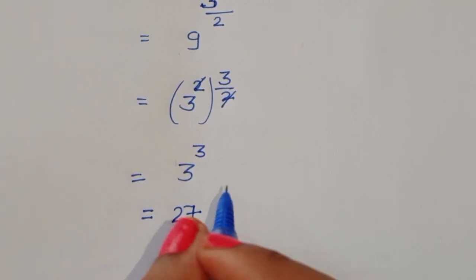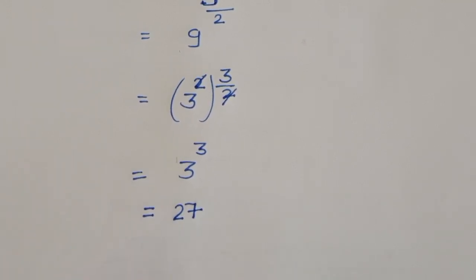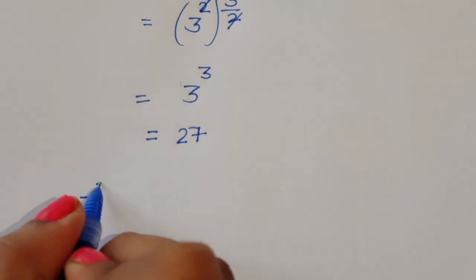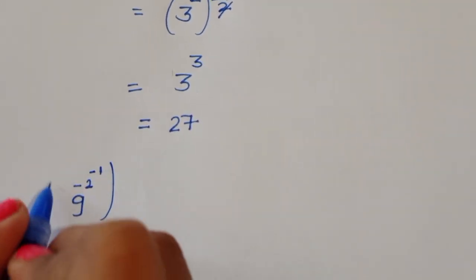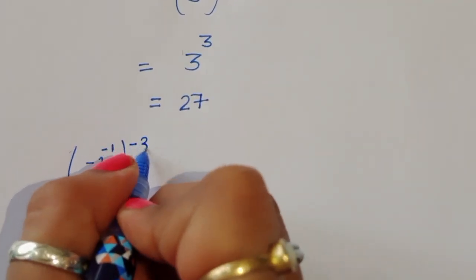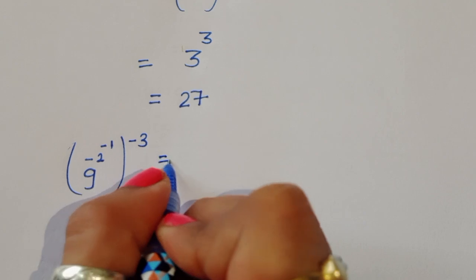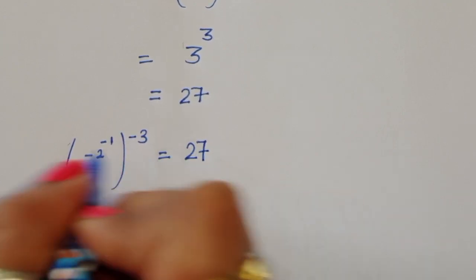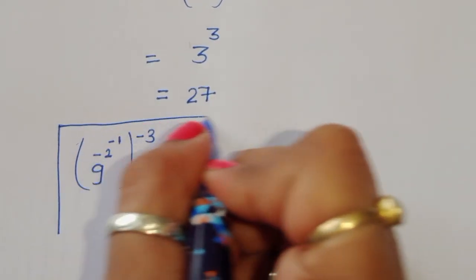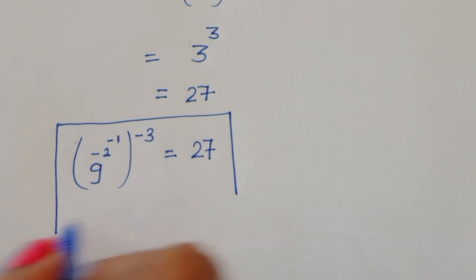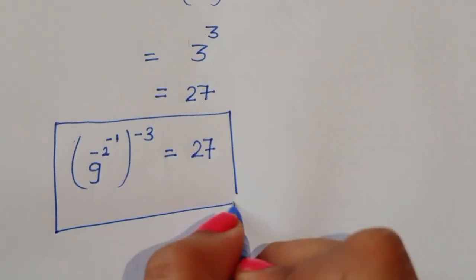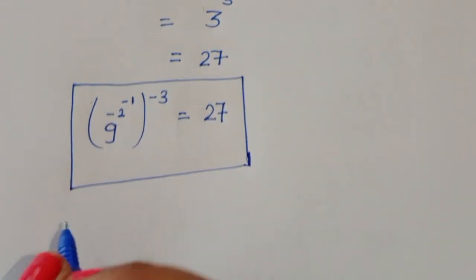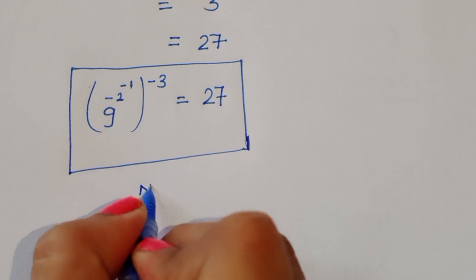3 power 3 equals 27. So the value of 9 power (minus 2 power minus 1), all to the power minus 3, is equal to 27. This is the solution for the first question. Now let's move on to the next question.